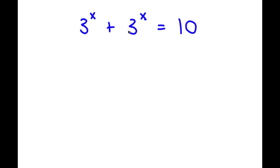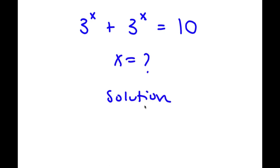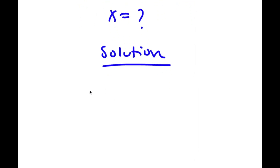I have 3 to the power of x plus 3 to the power of x is equal to 10. For this problem, I want to find the value of x. For my solution, I'm going to first start by factoring out 3 to the power of x from my left-hand side.